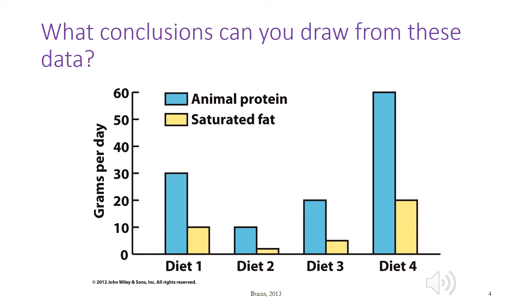The graph shows the amount of animal protein and saturated fat in four different diets. Based on the data here, what is the relationship between the two? Why do you think a diet high in animal protein increases the risk of heart disease?